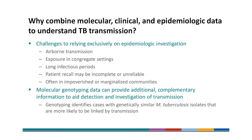We combine molecular data with clinical and epi data because there are challenges when it comes to trying to rely exclusively on epi data to investigate TB transmission. The fact that transmission is airborne can make it difficult to assess exposure. Assessing exposure in congregate settings can be very complex as well. TB also can have infectious periods that span years, and for that reason patient recall may be incomplete or unreliable. And TB transmission often occurs in impoverished or marginalized communities that are difficult to access. For these reasons, it is helpful to use genotyping, which can provide additional complementary information to aid detection and investigation of transmission, by identifying cases with genetically similar M-tuberculosis isolates that are more likely to be linked by transmission.